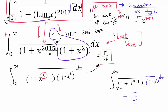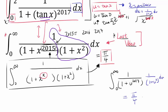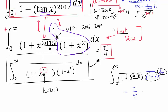We already know the integral from 0 to ∞ of 1 over (1 + x^k) times (1 + x²) dx equals π/4. In our case k = 27. Here we just have u instead of x, but it means the same thing because the choice of variable is arbitrary as long as you change all of them consistently. So we have basically what we had in the last video, and the answer is π/4.